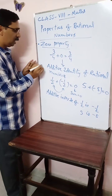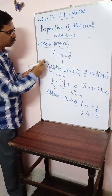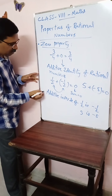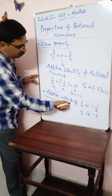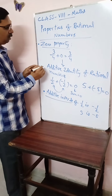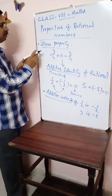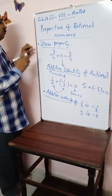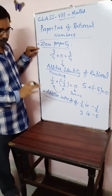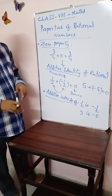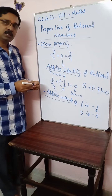So, zero property — where zero is called additive identity — and inverse property — additive inverse. Here, two properties we learned with regard to zero for rational numbers. Now we go ahead with some more properties.